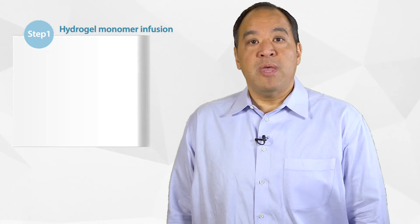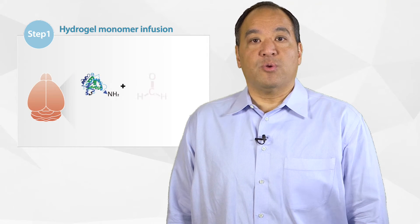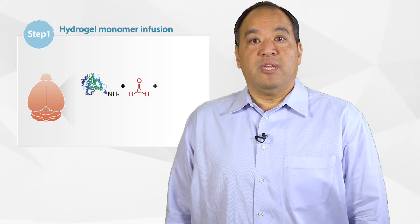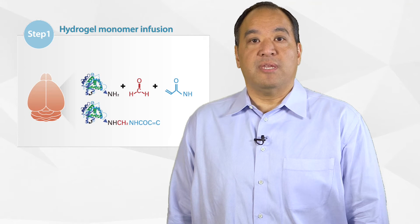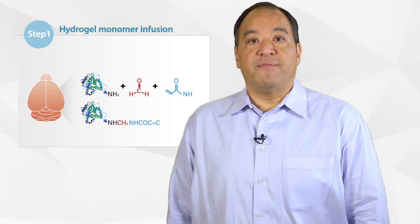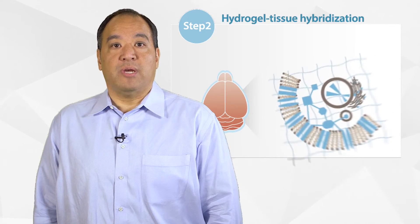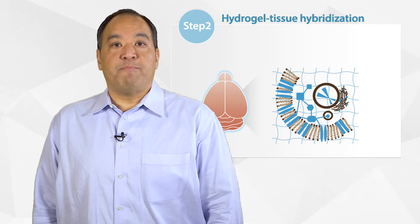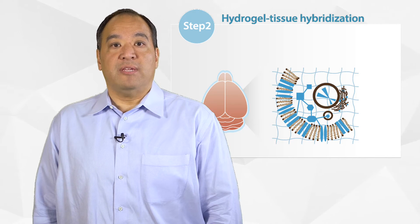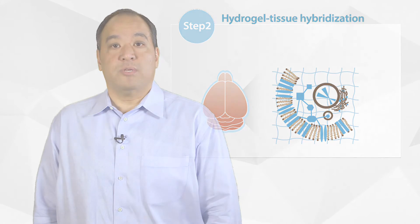CLARITY starts with a hydrogel monomer infusion into the tissue of interest. The tissue sample is incubated in a hydrogel solution to enable complete diffusion of the hydrogel into the tissue. After the tissue sample is fully infused with hydrogel, it's polymerized, which then cross-links biomolecules into their location to completely preserve the molecular structure of the tissue.